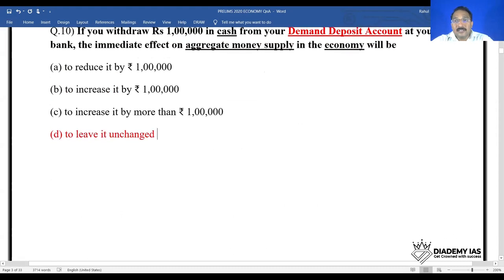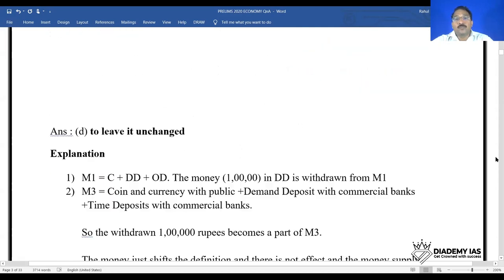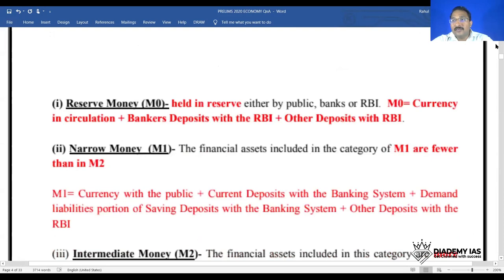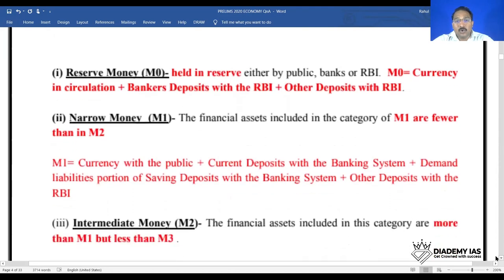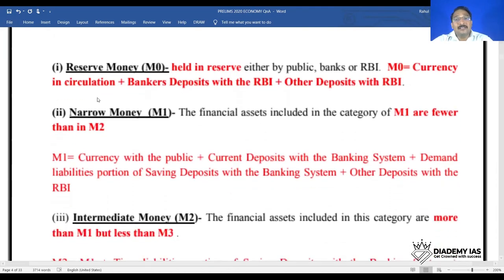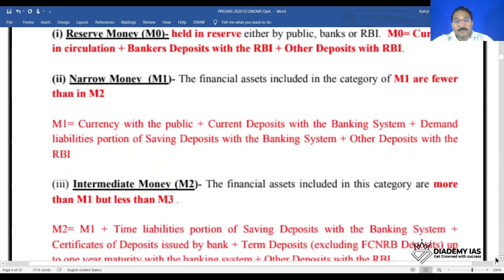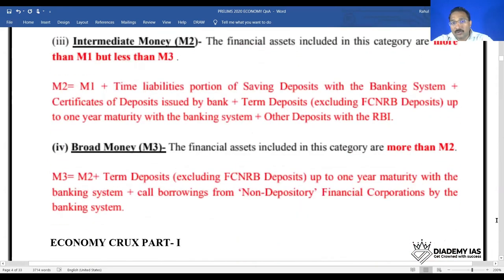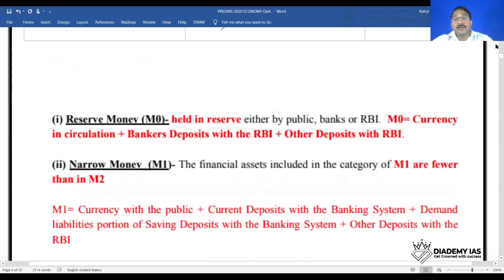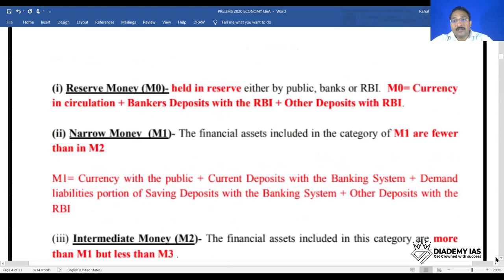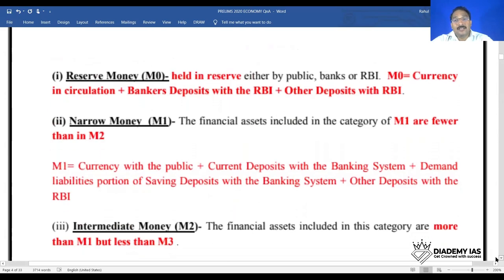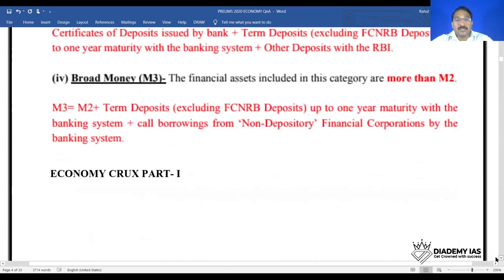Since one component is decreasing and another is increasing, overall there is no impact on the aggregate money supply in the economy. The answer is option D. If you apply common sense, the transaction itself has no net impact. This concept is covered in our static crux notes in detail — reserve money, narrow money, intermediate money, and broad money. But for conceptual understanding you need to go back to a basic source.